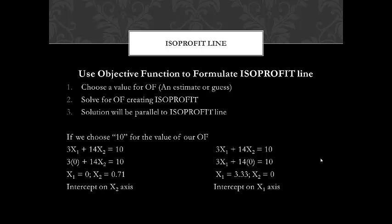So we start off by randomly, and I repeat randomly, choosing a profit amount. In this solution, I chose the number 10. Then axis intercepts can be calculated.